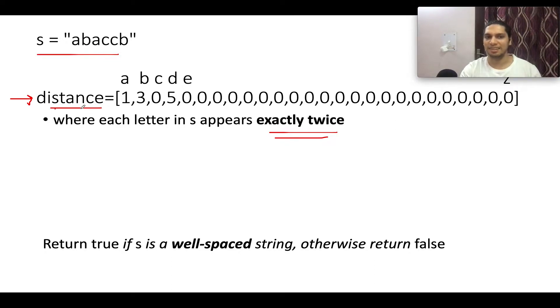This distance array signifies the probable distance value that may exist between the two instances of that same character. For example, this distance array says whether the distance between the A's that are present in my input string is 1 or not, that of B is 3 or not, that of C is 0, that of D is 5, that of E is 0 and for the rest of the elements as well.